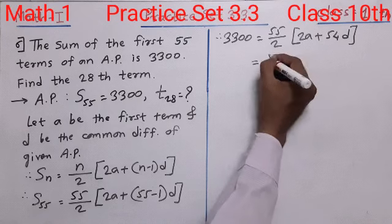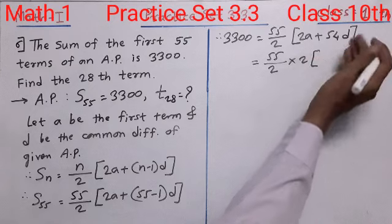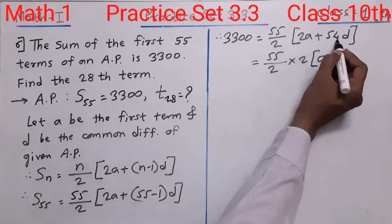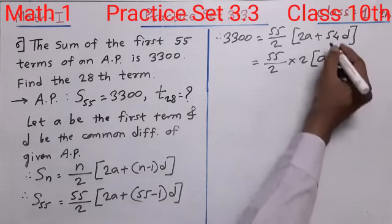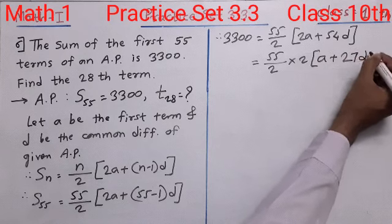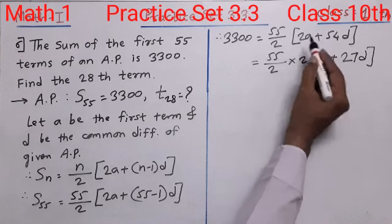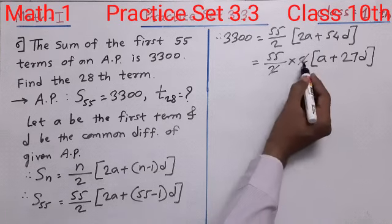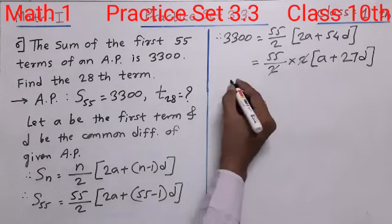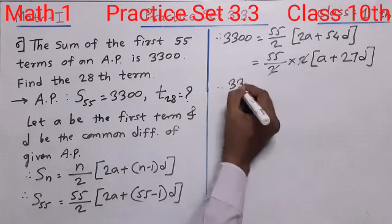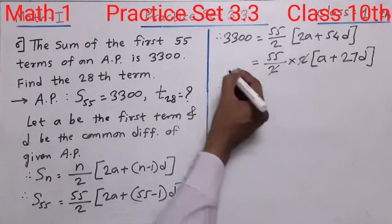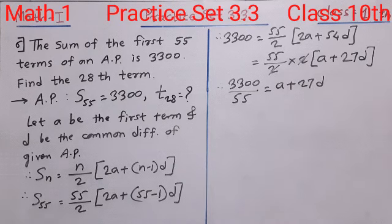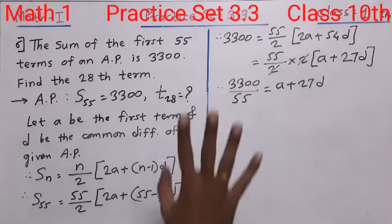The 2 in the numerator and the 2 in the denominator cancel each other. What remains is 3300 equals 55 multiplied by (A plus 27D). Shifting 55 to the left side as a divisor, we get A plus 27D equals 3300 divided by 55. Dividing 3300 by 55 by first dividing both by 11 gives 300 divided by 5, which equals 60.